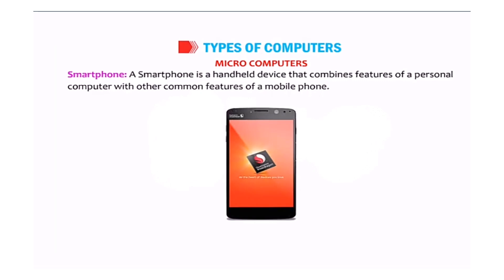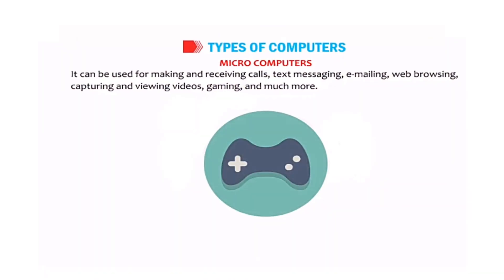A smartphone is a handheld device that combines the features of a personal computer with the common features of a mobile phone. It can be used for making and receiving calls, text messaging, emailing, web browsing, capturing and watching videos, gaming, and much more.